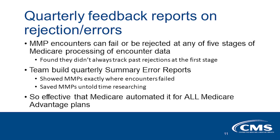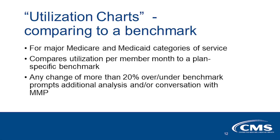A big reason for lack of completeness is when MMPs submit encounters but don't closely monitor and work rejections. The Medicare encounter data system has five stages through which it processes encounters and can reject encounters at any stage. A few years ago, the MMCO encounter team developed monthly summary error reports, which showed MMPs exactly which encounters failed and where they failed. This saved MMPs untold time researching rejections to work. It was so effective that Medicare Advantage automated it and provides it to all Medicare Advantage plans.